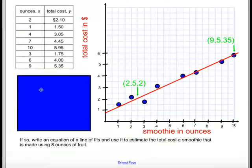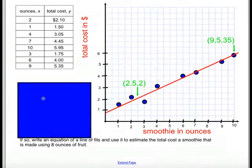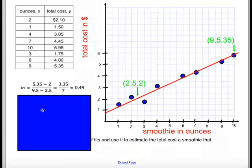Once you've done that, then you calculate the equation of your line. Remember, in order to calculate the equation of a line, you first have to calculate your slope using the slope formula. So I took 5.35 minus 2, because those are my y values, over 9.5 minus 2.5, which gave me approximately 49 cents, because this is talking about your slope, and your slope is the amount of money per ounce. So it's about 49 cents per ounce.